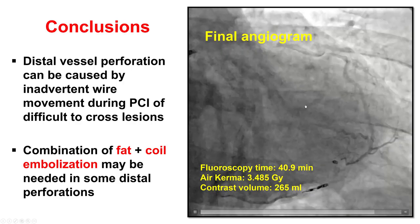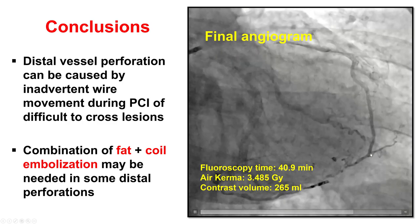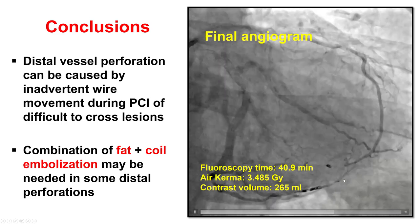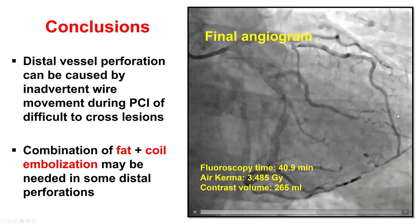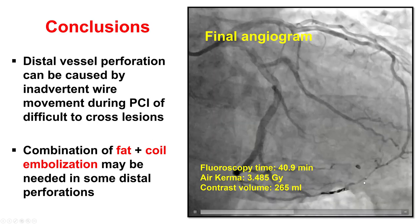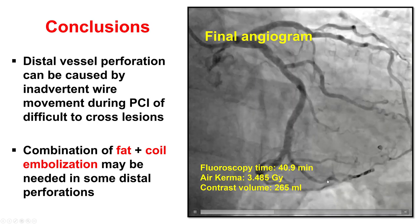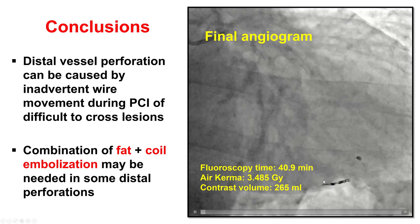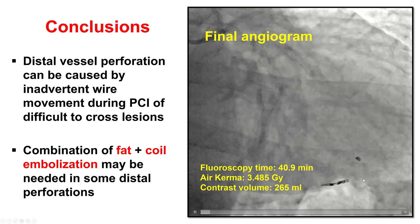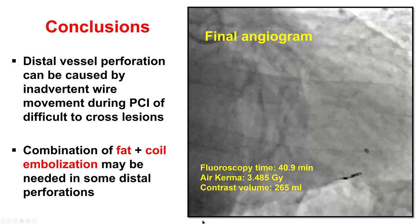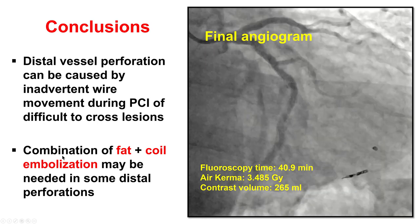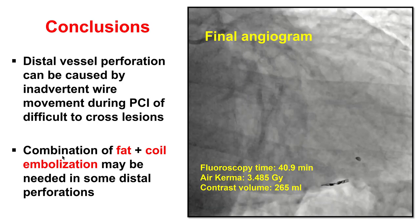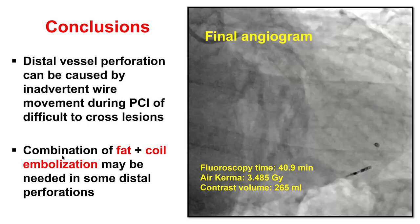In summary, this case demonstrates that distal vessel perforation can be caused by inadvertent guide wire movement, especially in cases where equipment delivery is very challenging. If such a perforation happens, treatment is typically with embolization — either fat or coil. This is an example where coil embolization alone was not successful. Coil embolization can take several minutes to thrombose, but in this case despite waiting five to ten minutes there was still flow, which is why we performed combined embolization with fat on top of the coils, successfully sealing the perforation. Being creative and meticulous in technique can help prevent such perforations, but if it happens, combined use of fat and coil can be another technique for successfully sealing them.